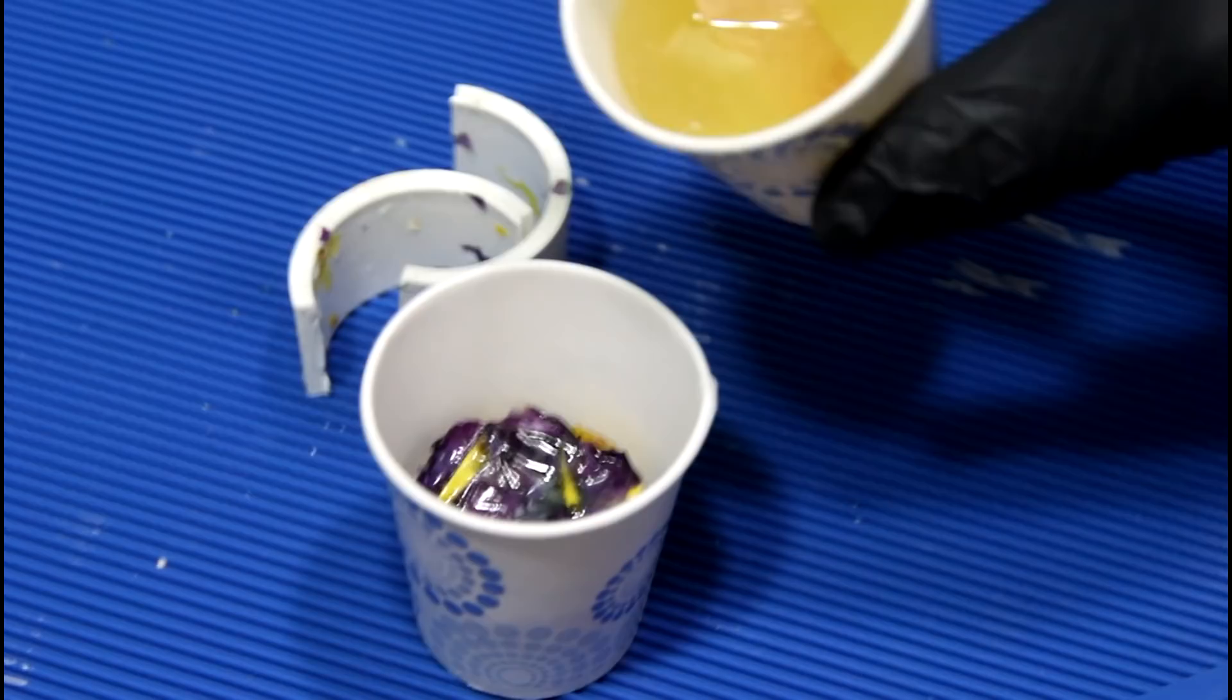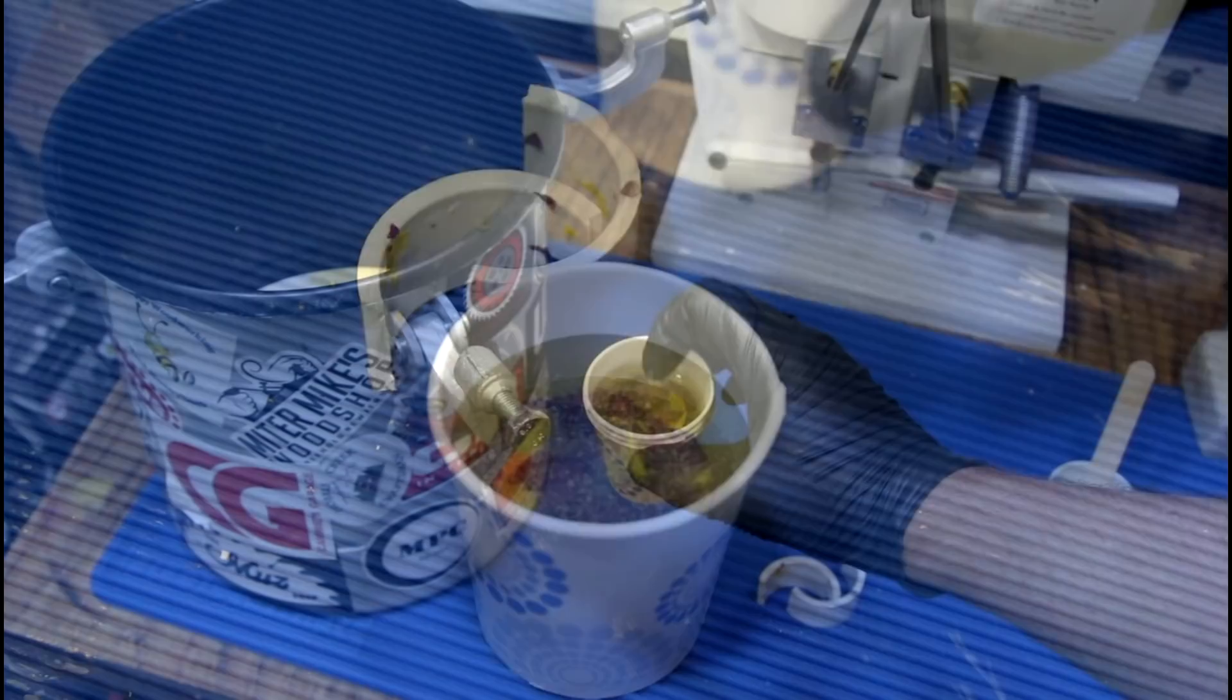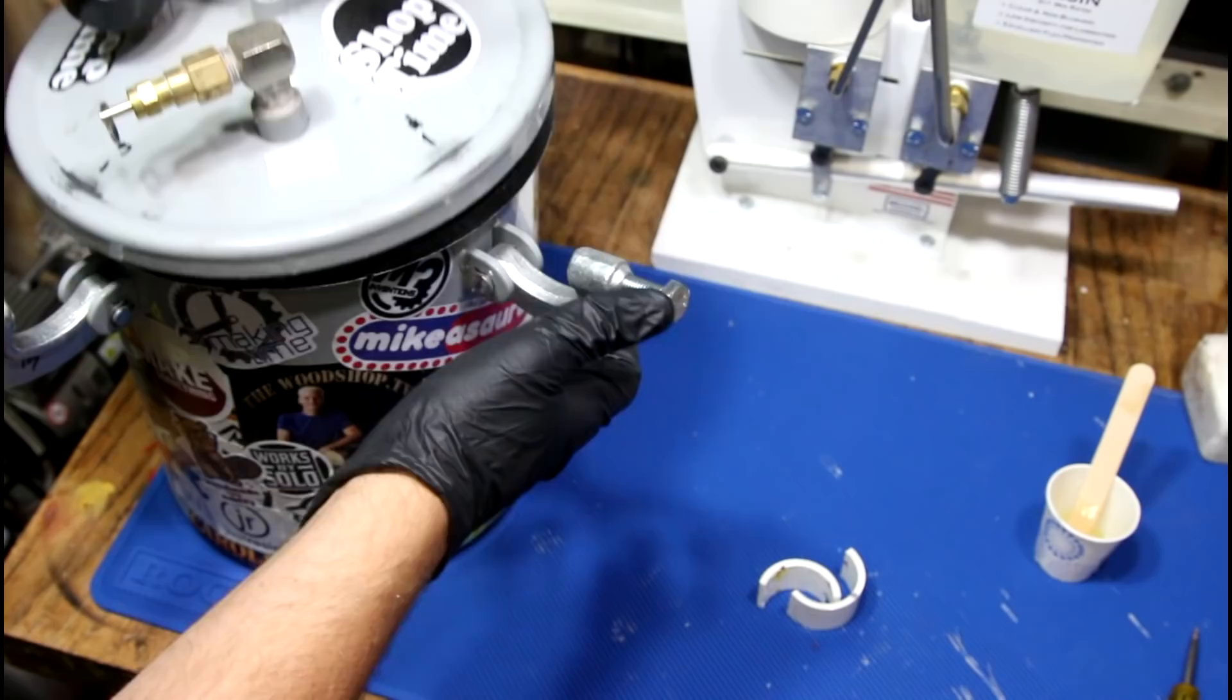So I'm just going to take this, I'm going to stick it right here in a Dixie cup and I'm going to pour the resin right over the top of it. You can see it's probably covered by a half an inch of resin there. I'm going to stick it back in the pressure pot.